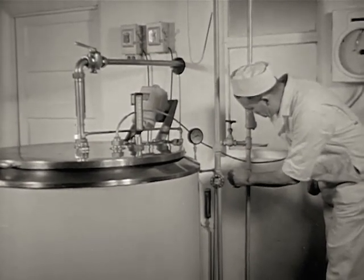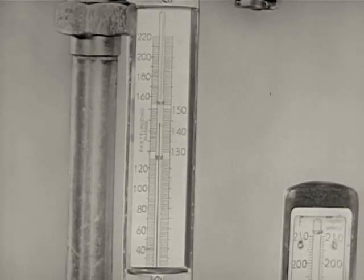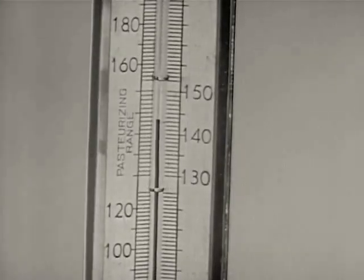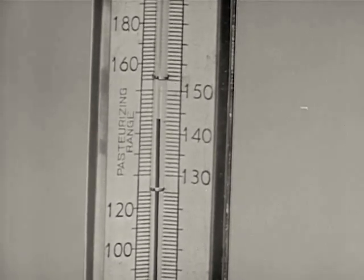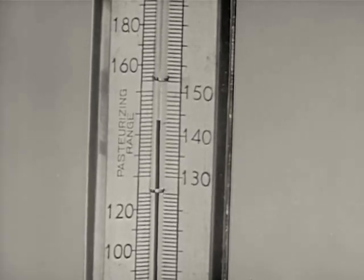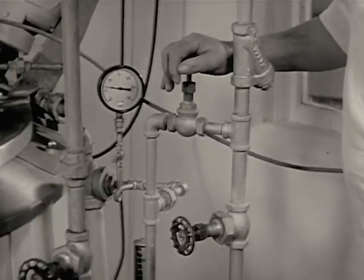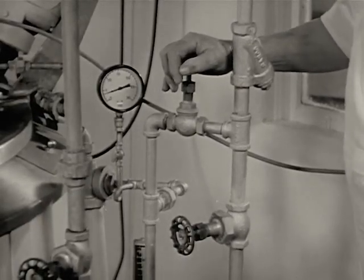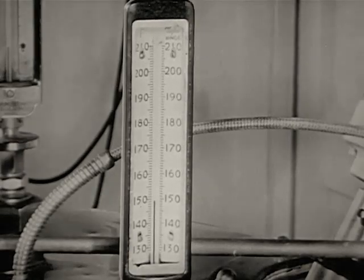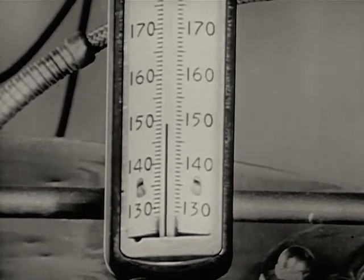When the indicating thermometer shows that the milk has almost reached pasteurization temperature, turn off the steam to the jacket to prevent the milk from becoming overheated. Pasteurization begins when the temperature of the milk reaches 143 degrees, not one second before. This is the lowest temperature, which, if held for 30 minutes, will kill all of the diseased germs which might be in the milk. The steam supply to the airspace heater is adjusted so that the airspace temperature is at least 148 degrees during the entire pasteurization holding time. This is important because tests have shown that 148 degrees is the lowest airspace temperature which will heat all foam and drops of milk on the cover and sides of the vat to at least 143 degrees.